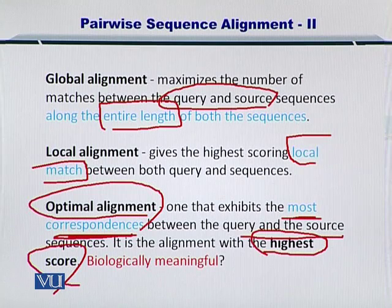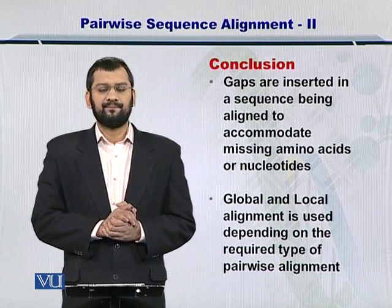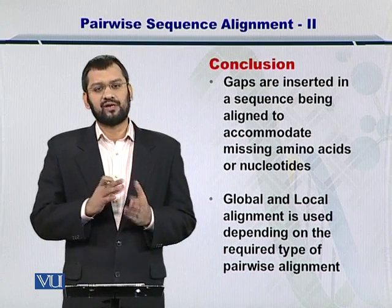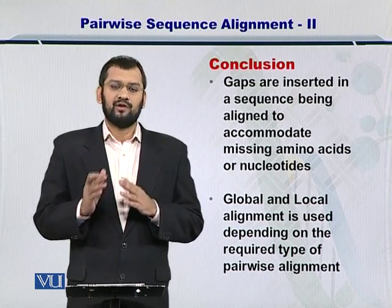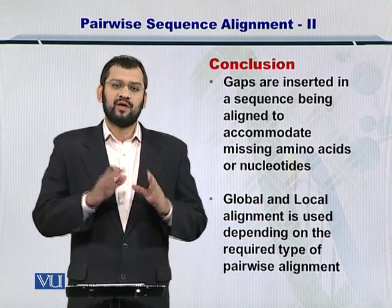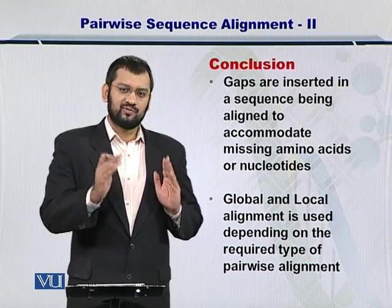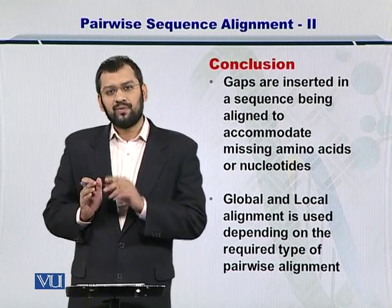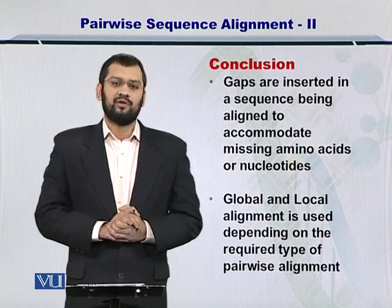It is important to note that such a highest-scoring alignment may not be biologically meaningful. In conclusion, gaps are inserted to accommodate insertions and deletions of nucleotides or amino acids from sequences during the evolutionary process. Global and local alignments are used depending on our objective: global alignment is used when comparing entire sequences, while local alignment is used when comparing only portions of sequences.